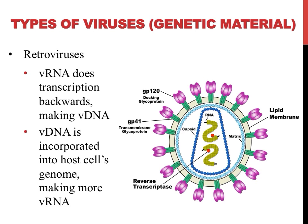Once viral DNA is made, it's incorporated into the host cell's genome, which is then used to produce more viral RNA. There are not a lot of retroviruses out there, but the reason they're worth mentioning is HIV — shown on the right on this slide — is an example of a retrovirus. HIV stands for Human Immune Deficiency Virus and causes AIDS, Acquired Immune Deficiency Syndrome, which is the leading cause of death in Africa and one of the top causes of death worldwide.